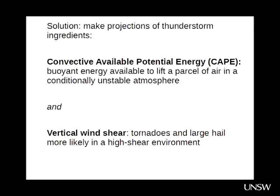To look at how thunderstorms might evolve in a future climate, most studies have taken the approach of making projections of thunderstorm environments. We can't model thunderstorms themselves, but we can model the instability and vertical wind shear that will lead to their formation. The instability has generally been assessed using convective available potential energy (CAPE), which is the vertically integrated buoyant energy available to lift a parcel of air in a conditionally unstable atmosphere, and the vertical wind shear — the difference in wind speed between two particular heights.